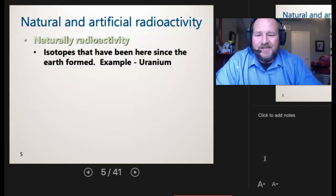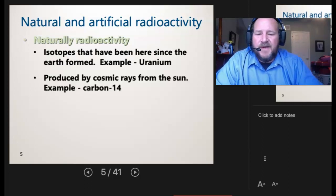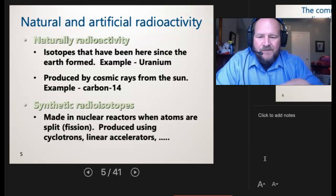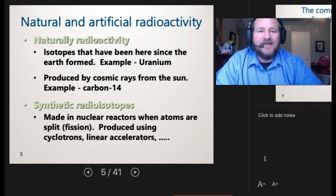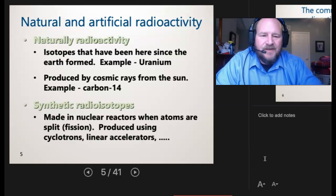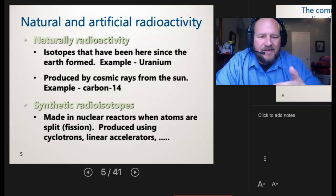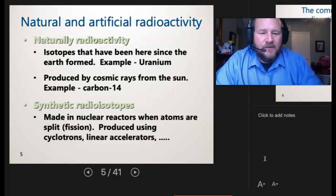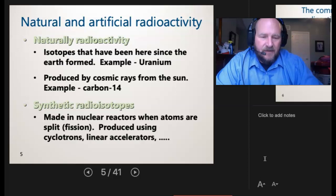There's natural, and then there's also artificial radioactivity. We're not going to concern ourselves with the artificial. What we're going to look at are naturally radioactive elements. Isotopes that have been here since the Earth has formed, for instance, uranium. Produced by cosmic rays from the sun, for example, carbon-14. If you remember, carbon had three isotopes, 12, 13, and 14. 14 is radioactive. There's also synthetic radioisotopes, usually made in nuclear reactors. We're going to be focusing on the naturally occurring radioactive atoms and isotopes as they apply to the medical field.